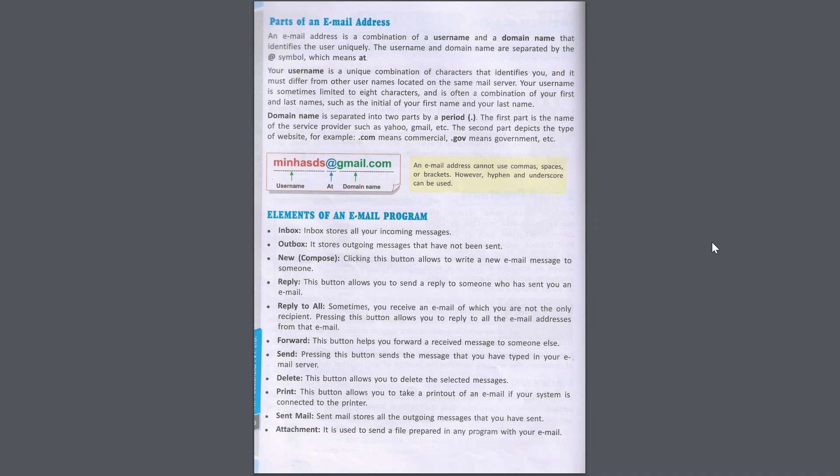Elements of an Email Program. Inbox stores all your incoming messages. Outbox stores outgoing messages that have not been sent. New/Compose: clicking this button allows you to write a new email message to someone. Reply: this button allows you to send a reply to someone who has sent you an email. Reply to All: sometimes you receive an email of which you are not the only recipient — pressing this button allows you to reply to all the email addresses from that email. Forward: this button helps you forward a received message to someone else.